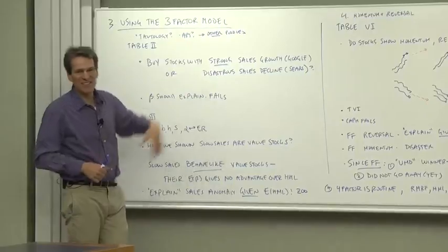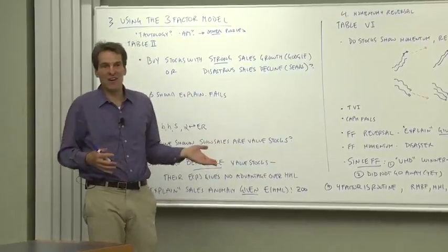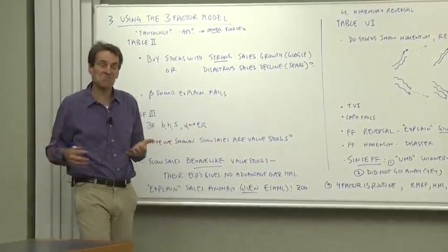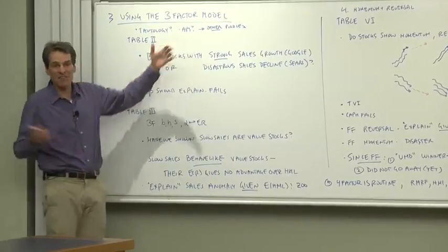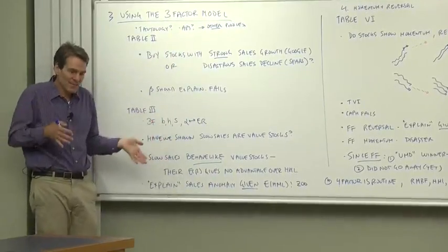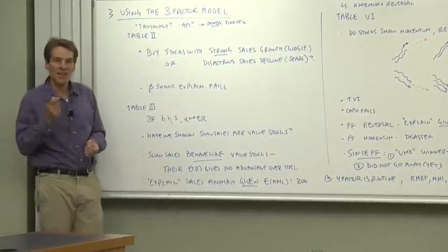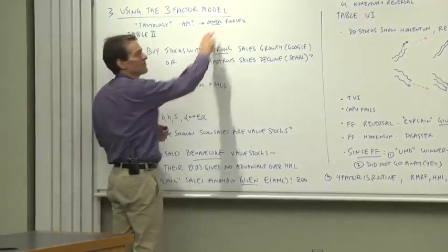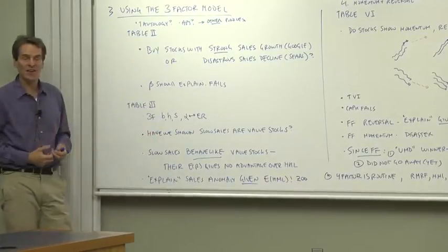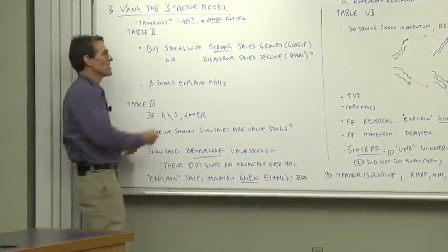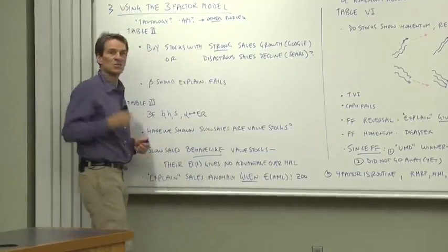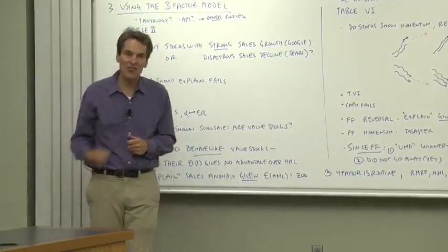You may ask yourself, isn't this just an APT? The R-squareds are high, so there's a huge factor structure. That may be right, but if so, you may think, well, so what? I can explain size and book-to-market with size and book-to-market. How is that useful for other things? Well that's the key element that makes the Fama and French model so useful. Not how it works on size to book-to-market, but how this model is useful in understanding other puzzles.